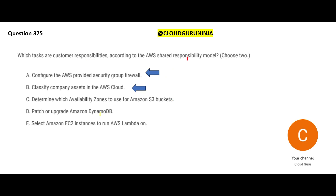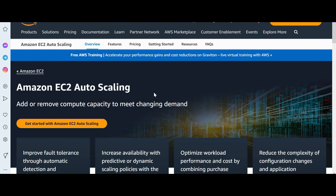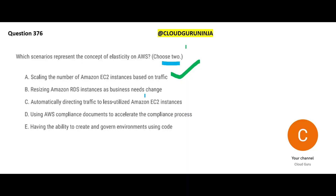Let us look at the next question: which scenario represents the concept of elasticity in AWS? We need to choose two answers. Option A says scaling the number of EC2 instances based on traffic — is this elasticity? Yes, this is elasticity. We use EC2 Auto Scaling for this purpose. It adds or removes compute capacity based on demand: if there are more users logged into a website it adds compute, if there are fewer users it removes the extra compute.